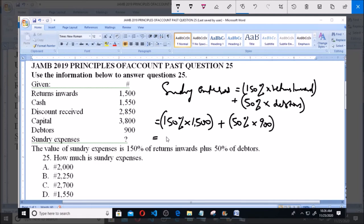So which equals 2,250 plus 450, which is giving us 2,700 naira. So our sundry expenses is option C.